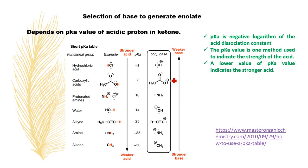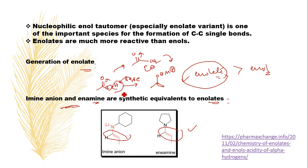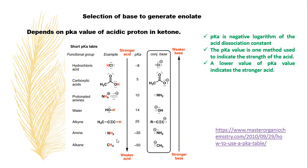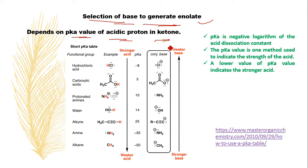How to remove the acidic proton from a ketone? That is done using a base. How to select a base to generate an enolate? The base selection completely depends on the pKa value of the acidic proton in the ketone. pKa is the negative logarithm of the acid dissociation constant — it is a method used to indicate the strength of an acid.